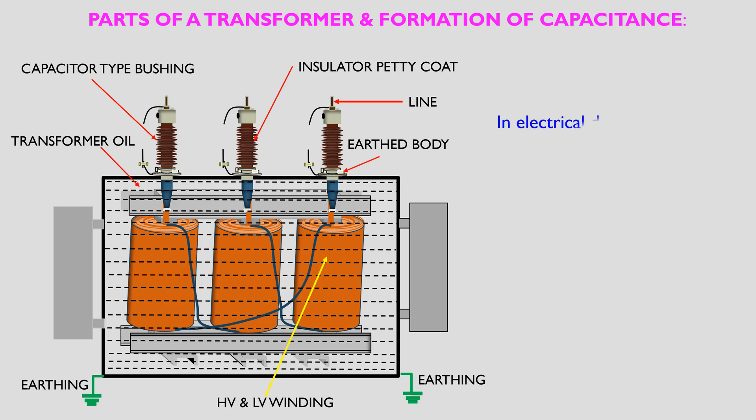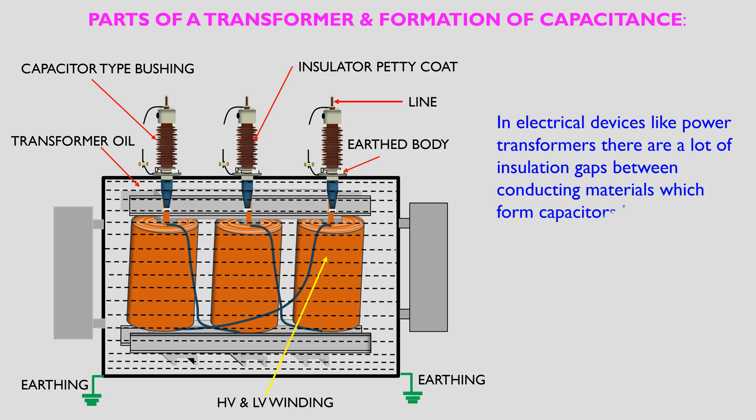In electrical devices like transformers, there are a lot of insulation gaps between conducting materials which form capacitors, like winding to winding, winding to tank and core, and bushings.